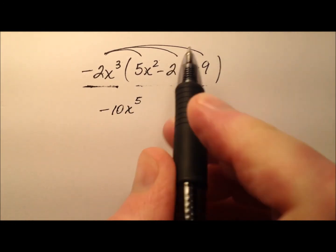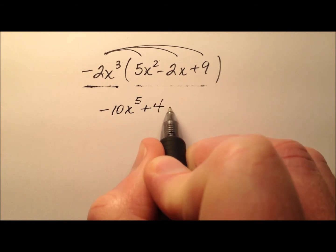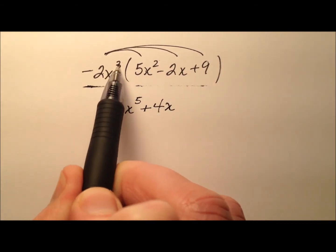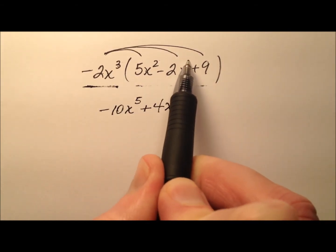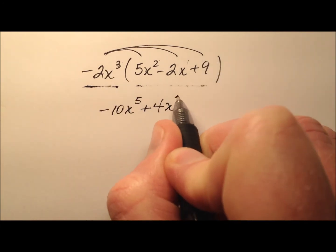Then negative 2 times negative 2 is positive 4. And we have x again—x cubed times x, so basically just one more x, giving us x to the fourth.